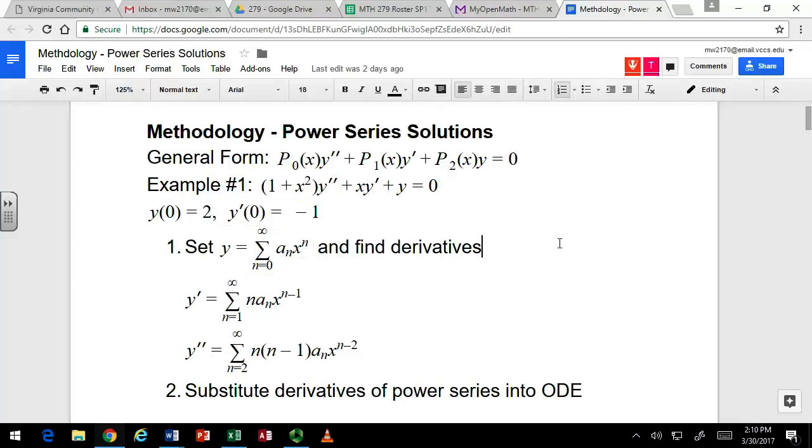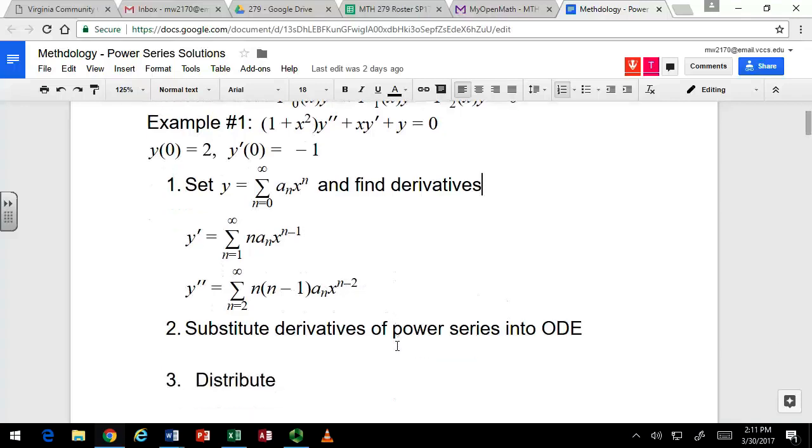And we talked about the derivatives of that just using the power rule. We're able to bring that exponent n down and drop it by one to n minus one. And in the second derivative, bring the n minus one down and drop the exponent to n minus two. You can always use those formulas when your initial conditions are at zero.